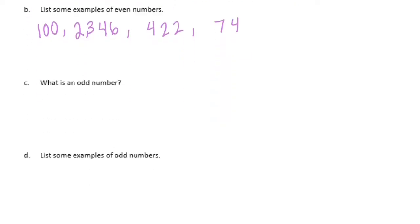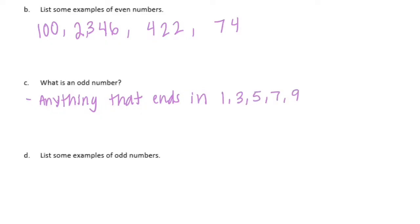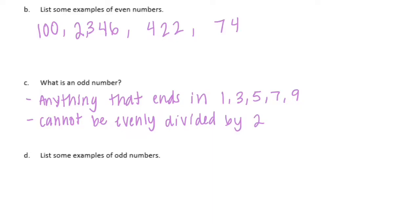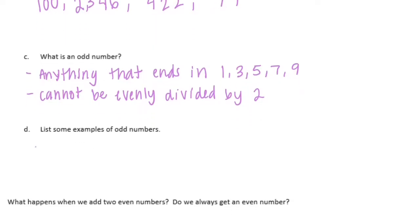What's an odd number? It's kind of the opposite of an even number. An odd number is anything that ends in 1, 3, 5, 7, or 9, or it cannot be evenly divided by 2, and they're not multiples of 2. Let's list some odd numbers: 73, 429, four thousand one hundred seventy-seven, and 101.